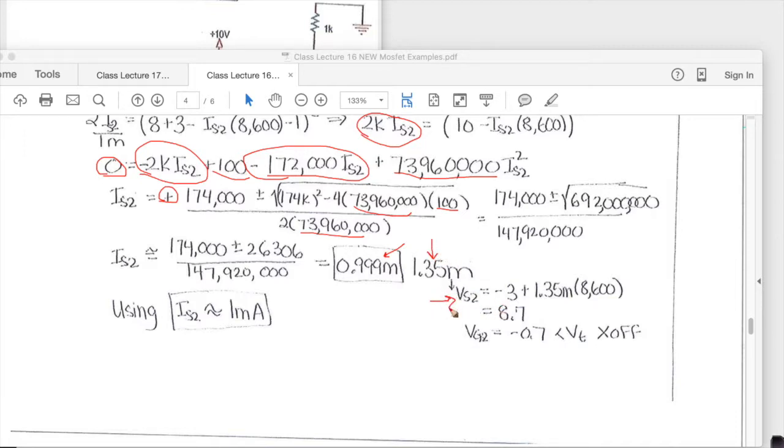Plugging that into the VS2 equation gives me 8.7 for VS2 and with the VG2 then that gives me a VGS2 of minus 0.7 which means VT is not less than, so VT was given as 1 and so this is less than that and so that is not the right value. So this will be my IS2 value is about 1 milli.